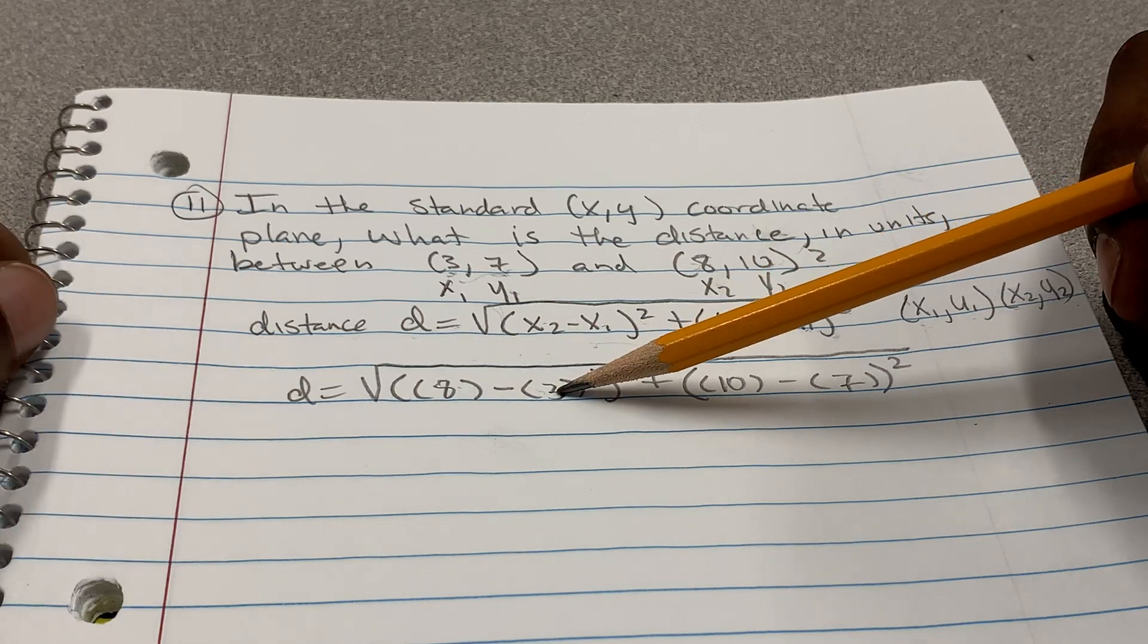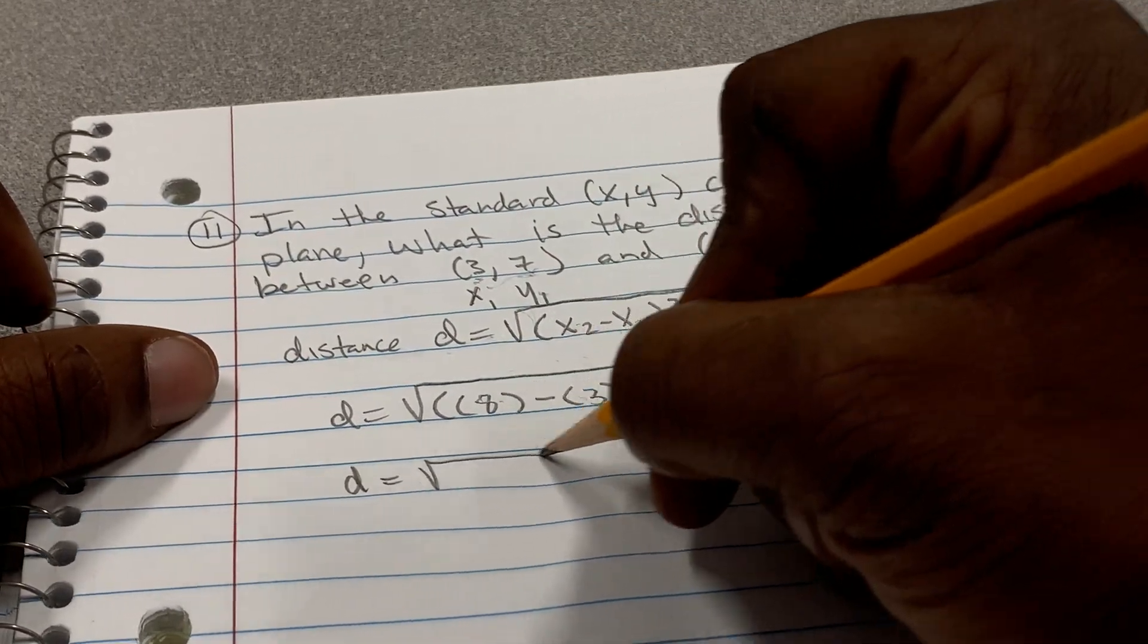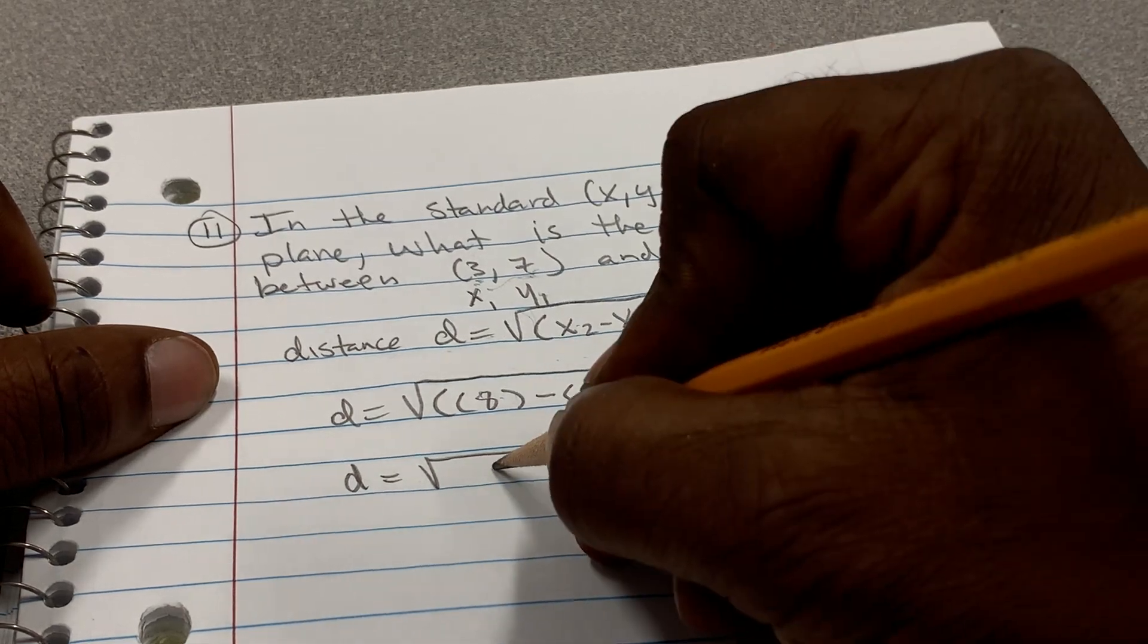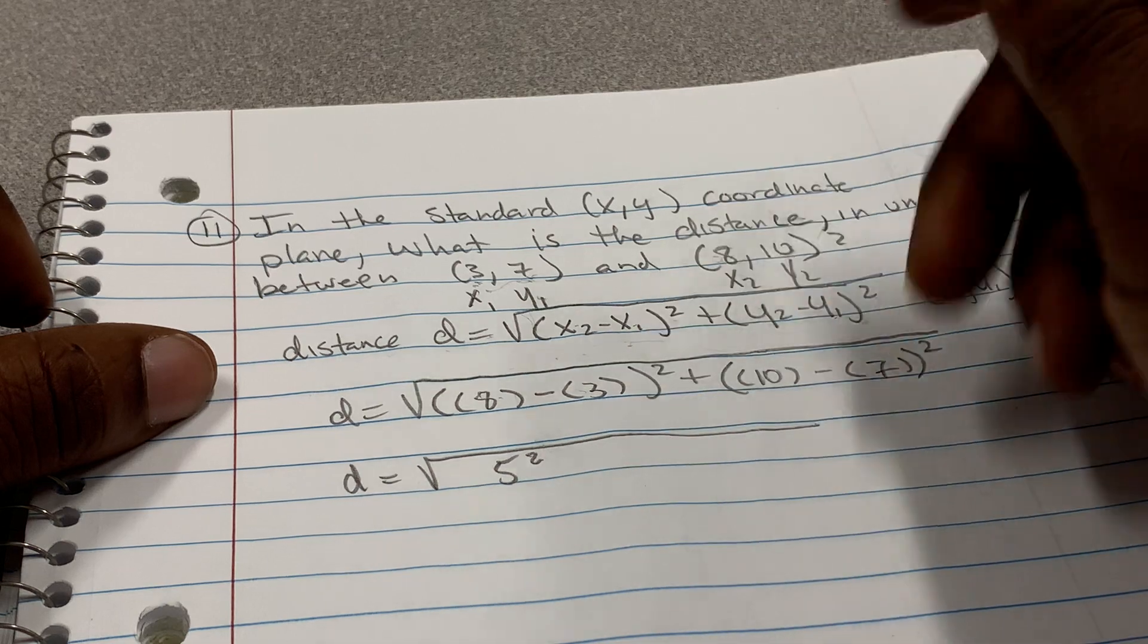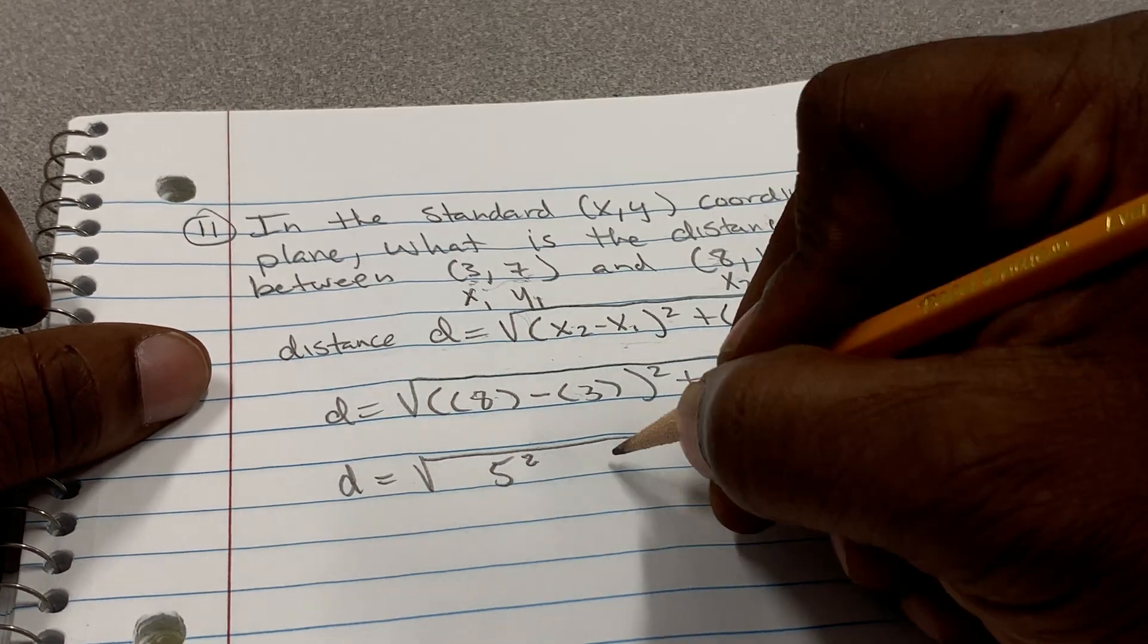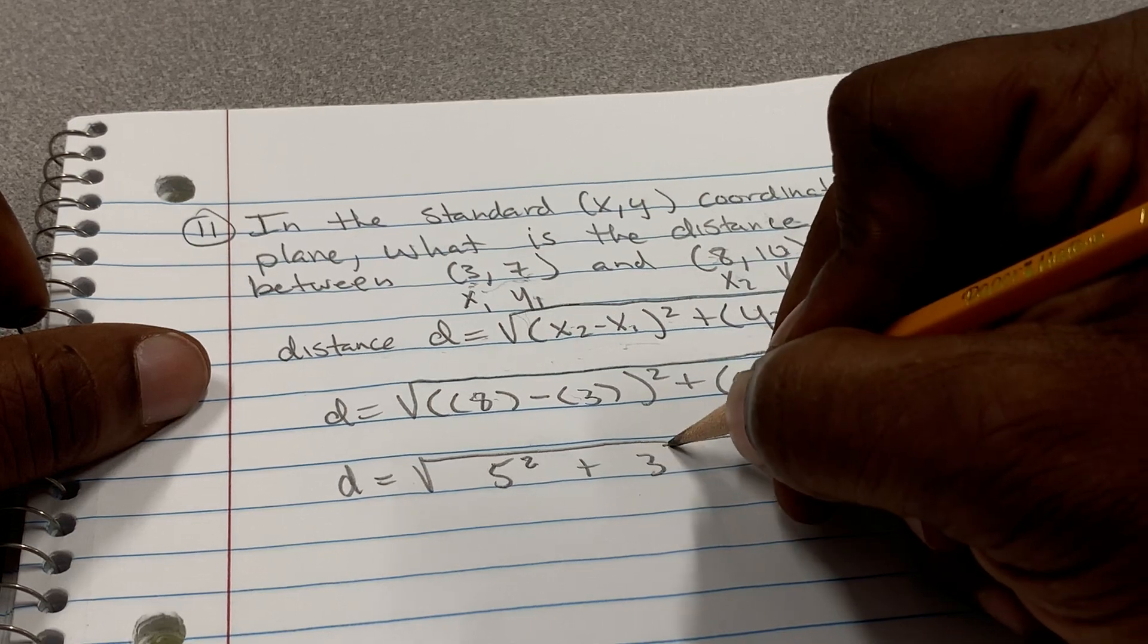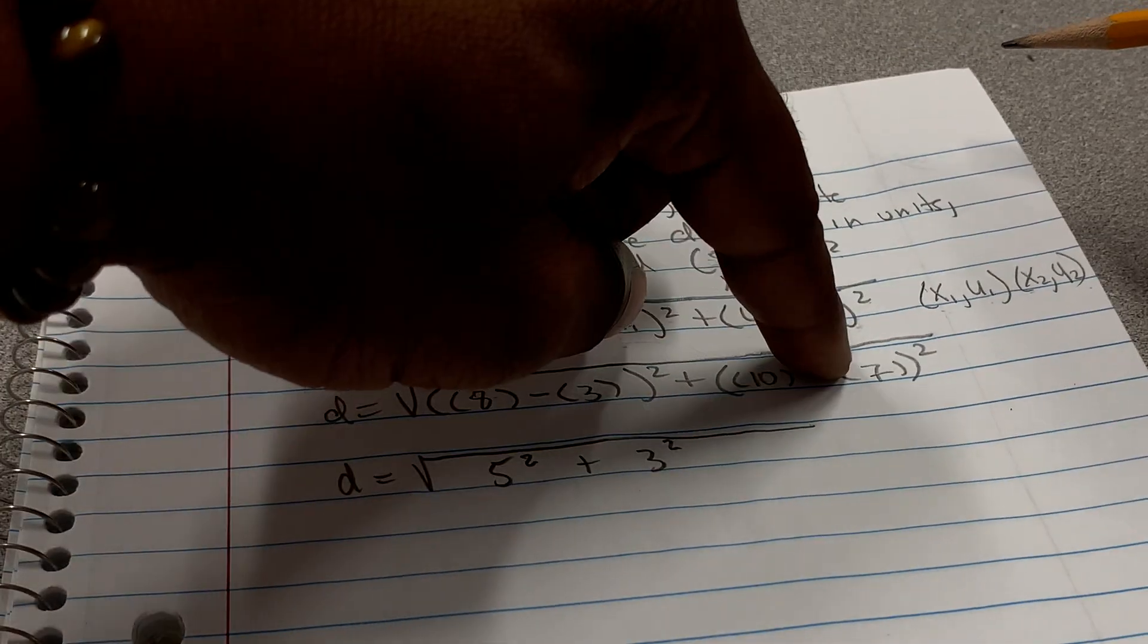Now, 8 minus 3 is going to be 5. So first let me rewrite, and I want all the students to rewrite. So this is going to be 8 minus 3 is 5 squared, right? 10 minus 7 is going to be 3 squared. So I got my answer for here, down here, and I got my answer here, down here.